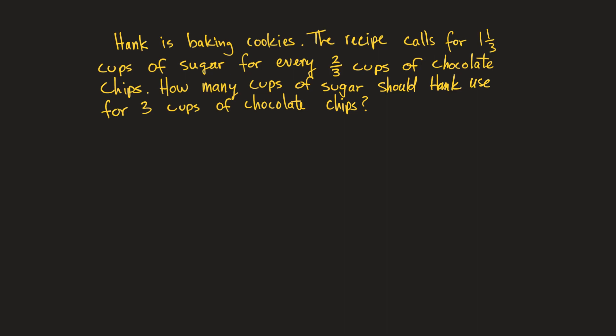Okay, here is a word problem that would use a proportion to solve it. In the problem, Hank is baking cookies. The recipe calls for one and a third cups of sugar for every two-thirds cups of chocolate chips. How many cups of sugar should Hank use for three cups of chocolate chips?